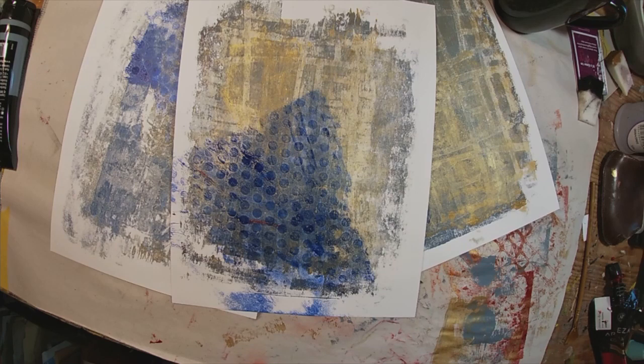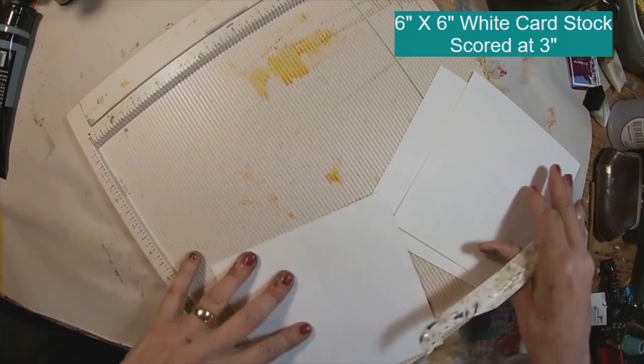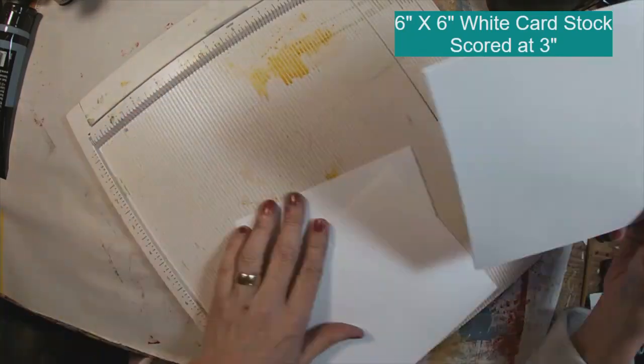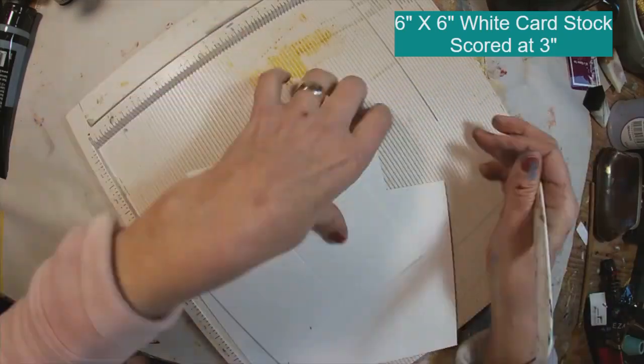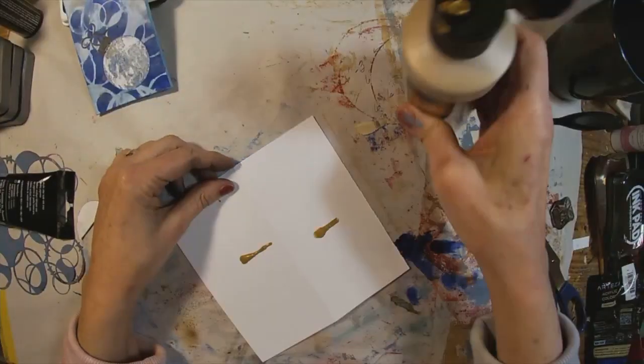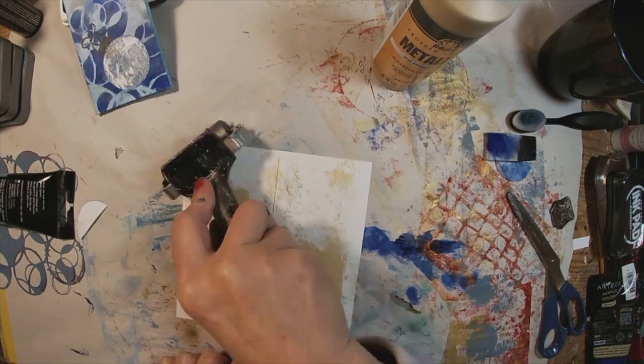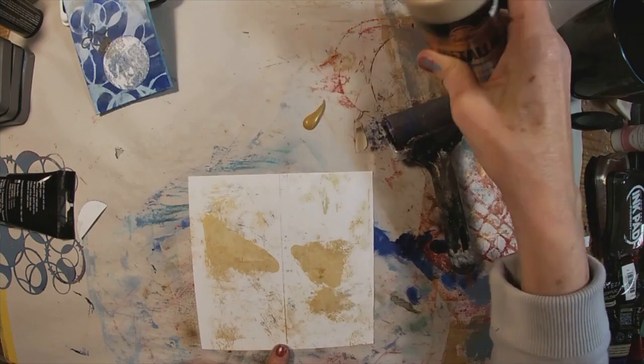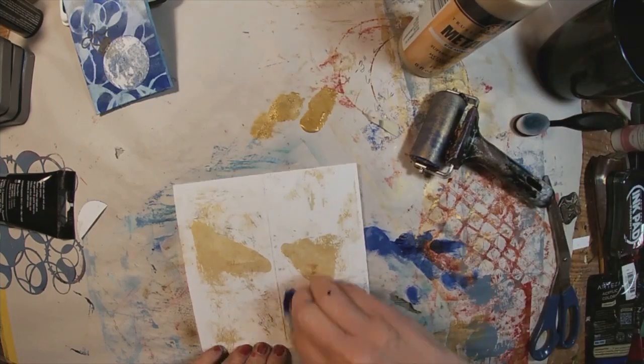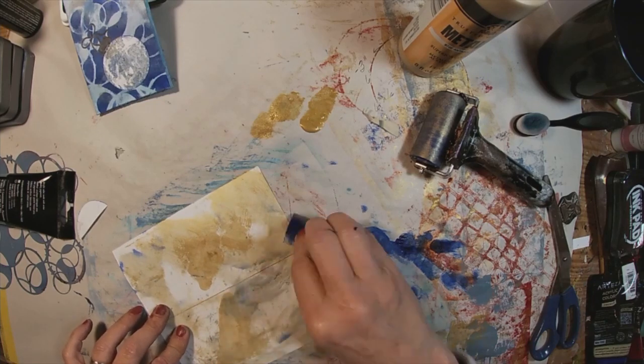I'll set those aside and get the substrate or the card structure together. This is a six-inch by six-inch piece of white cardstock. I'm simply scoring it at three inches. I'm taking my antique gold color and spreading it on the card. I squirted the paint right on the card and spread it with my brayer.